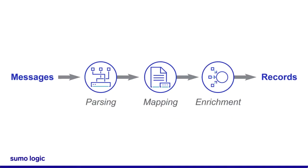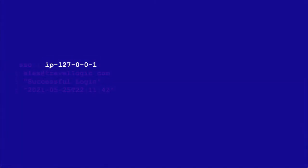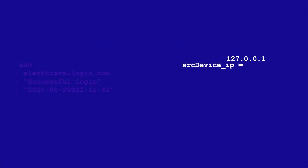Once all that's configured, data starts flowing into CSE. Each log message is parsed, mapped, and enriched to become a record. This is the data normalization process. CSE parses out the relevant info, like IP addresses, maps that info to a key-value pair, and enriches it with data — like whether or not that IP address is on a list of known threat actors from CrowdStrike's database.